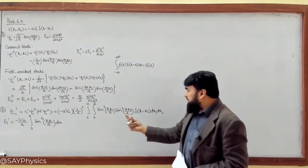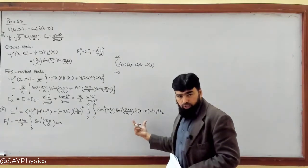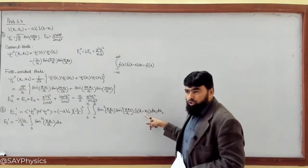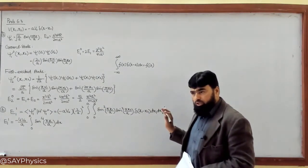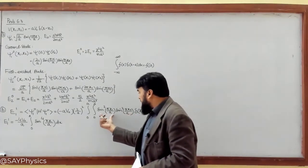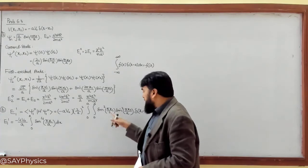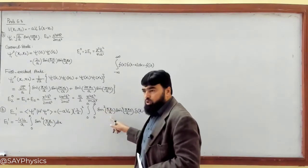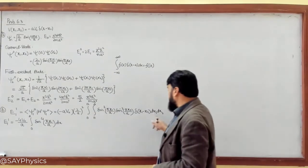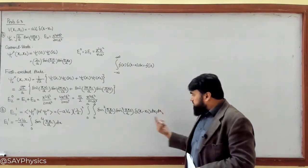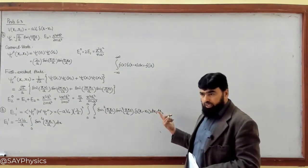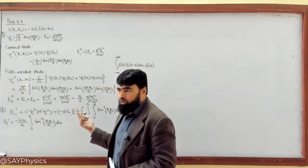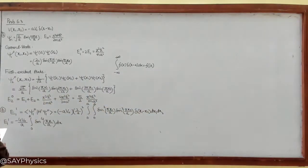You apply one integral on this one for the delta function, and it is 0 to a. When x₁ equals x₂ it will give you a value, otherwise not. So it will come out to be sin squared πx₁/a times sin squared πx₁/a, which will become sin⁴(πx₁/a) dx₁. And then I can convert dx₁ to dx — it does not matter as long as the limits are the same.